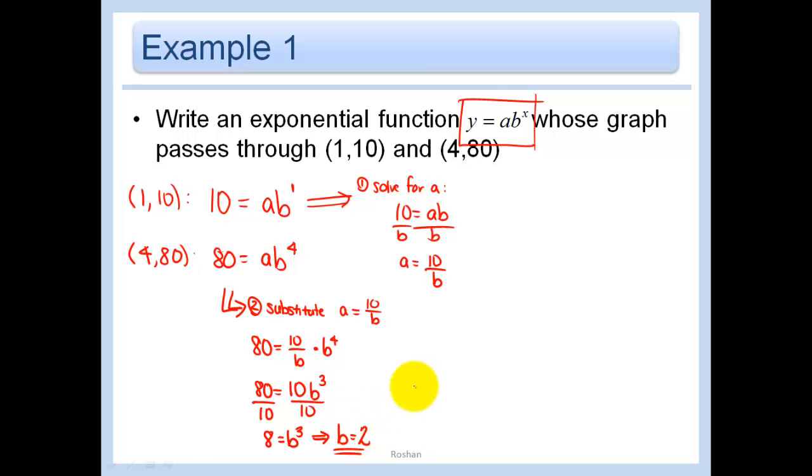So now we have b equals 2. Well we know a is equal to 10 over b, which is 10 over 2 or 5. And so our exponential equation is y equals a, which is 5, times 2 to the x. Note this is our final answer. This does not equal 10 to the x because remember order of operations say exponents come before multiplication. So the parent function is 2 to the x and it's stretched by a factor of 5.